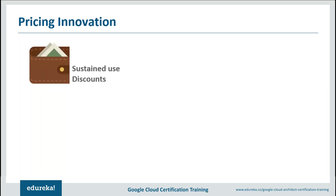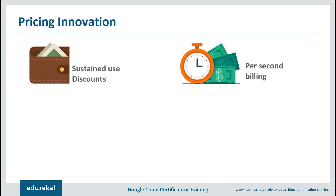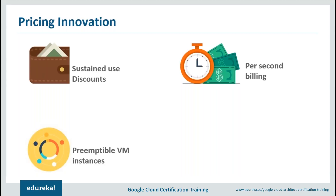Next on this list we have per-second billing, which I've already discussed, so let's move to preemptible VM instances. There are quite a few services which people implement in batch processes, meaning the lifespan can be smaller. If your system is highly fault tolerant and can use these shorter-lifespan instances, this feature is for you — it will help you save around 80% of your total investment.